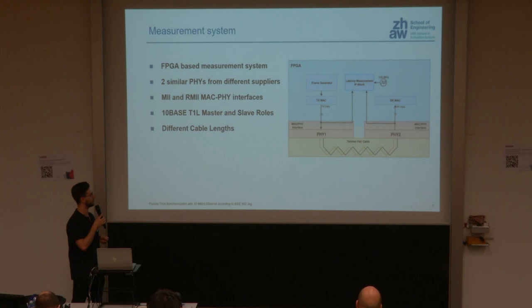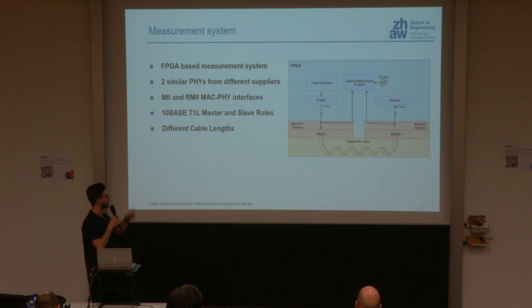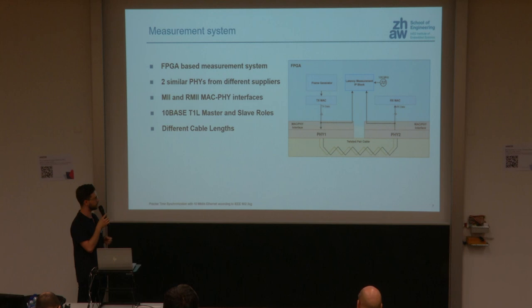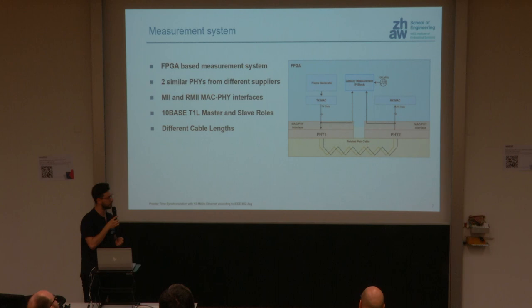Our measurement system is built on an FPGA. We connect two PHYs to the FPGA and have a frame generator that sends frames periodically through the PHYs. The frame generator sends to PHY 1, which transmits over a twisted pair cable to PHY 2, received on the other side of the FPGA. A latency measurement block monitors the MAC-PHY interface, detects the start-of-frame delimiter, and timestamps sending and receiving. This happens in both directions on the full duplex link. The measurement block uses a 100 MHz clock, giving 10 nanosecond resolution.